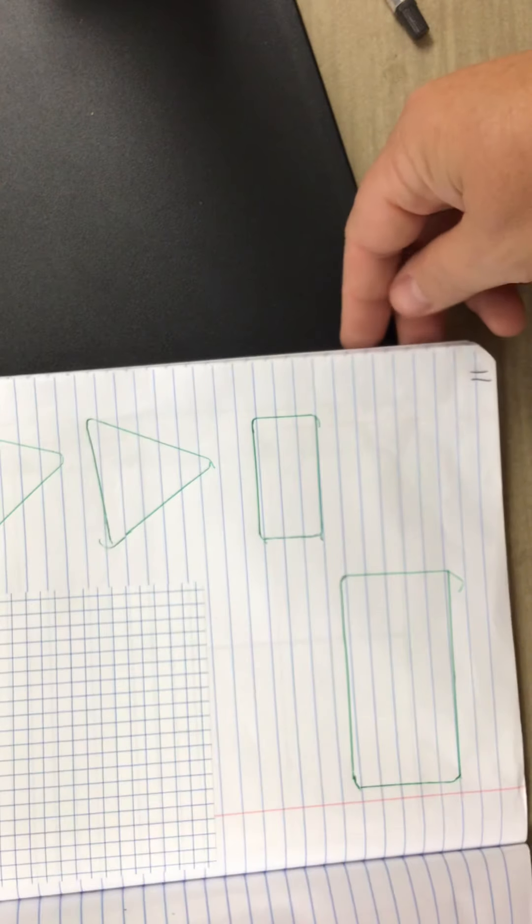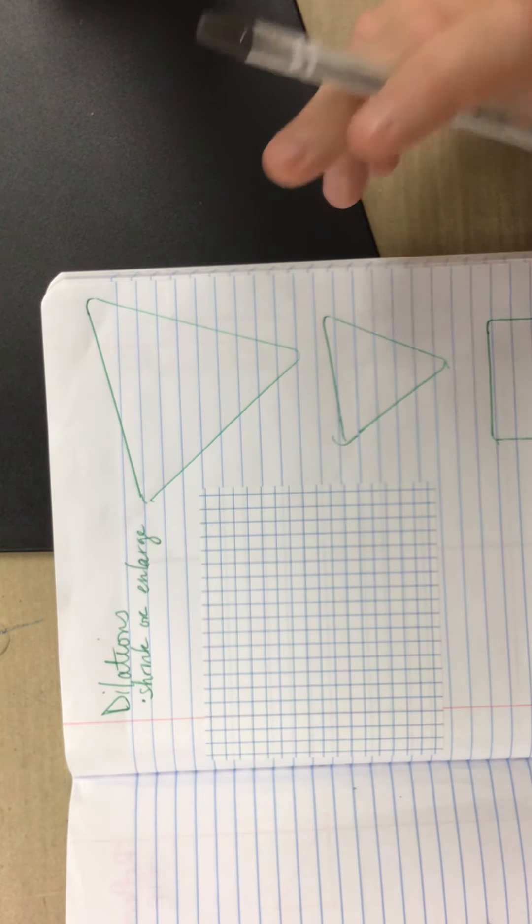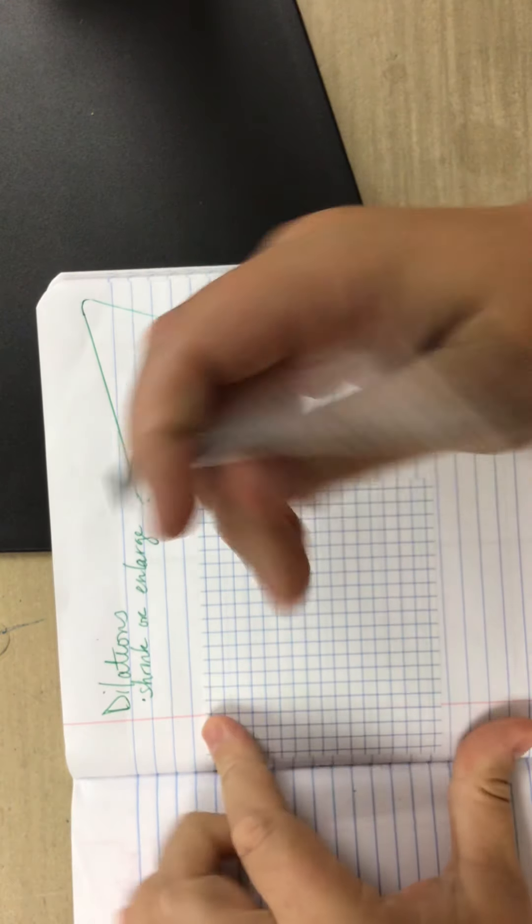Okay, so in this video, we're going to fill out the dilations page in your notebook, which is page 11. So a dilation is a type of transformation when your figure, whatever you have, either shrinks or enlarges.